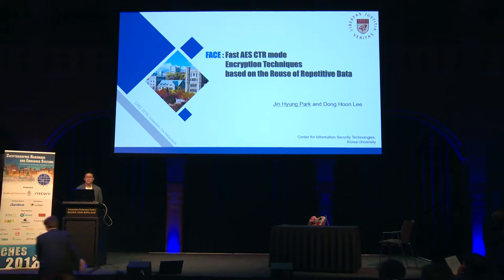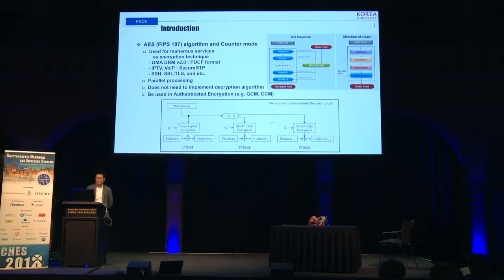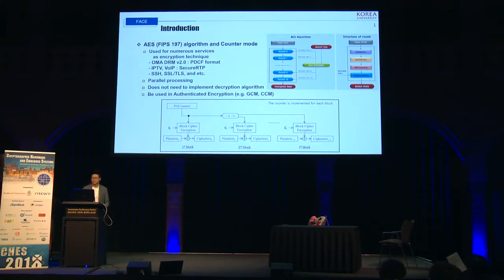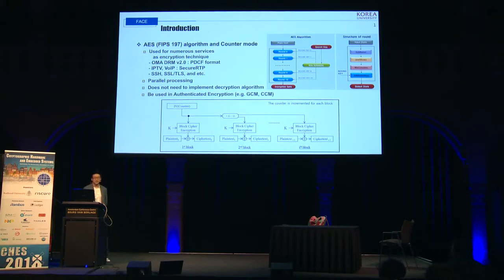Thank you for the introduction. Now I will start my presentation. The topic of my presentation is Performance Improvement of AES Counter-Mode in Software. The block cipher AES in Counter-Mode is used for numerous applications as an encryption technique because of its various advantages such as proven security, no randomness requirement, and parallel processing. AES Counter-Mode is not only operated on its own, but also incorporated within authenticated encryption schemes such as AES-GCM and AES-CCM. So optimizing AES Counter-Mode has numerous benefits beyond the encryption itself.